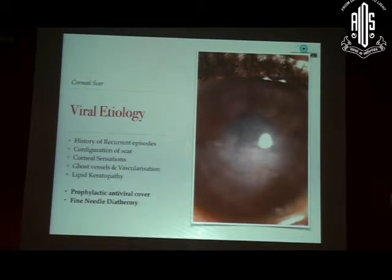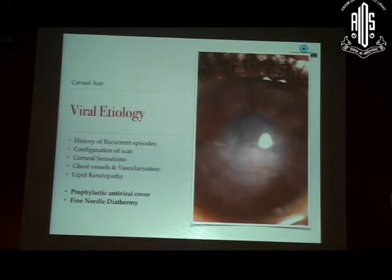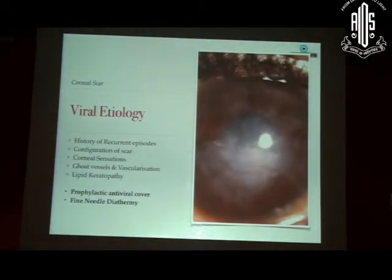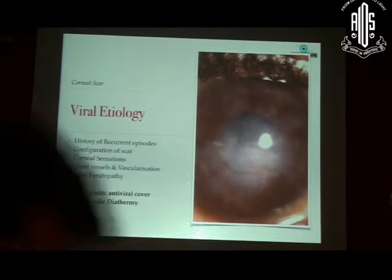One particular point I wanted to make: if you have a corneal scar, try to get an idea of whether this is a post-viral scar. There are some indicators — a history of recurrent episodes of redness, configuration of the scar not having a dendritic form, reduced corneal sensation, or vascularization in the context of herpetic keratopathy. All of these are pointers that herpes virus could have been involved. If you are doing deep anterior lamellar keratoplasty in a post-viral scar, very often there is recurrence. In my own hands, about 20% of post-viral cases have some form of recurrence of viral pathology. So in such cases, you always have to give prophylactic antiviral cover.